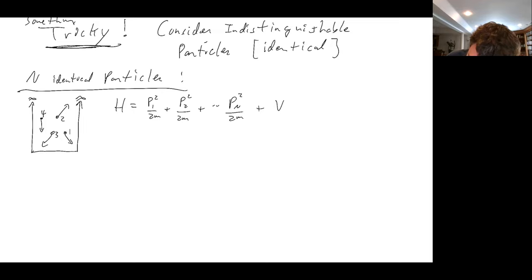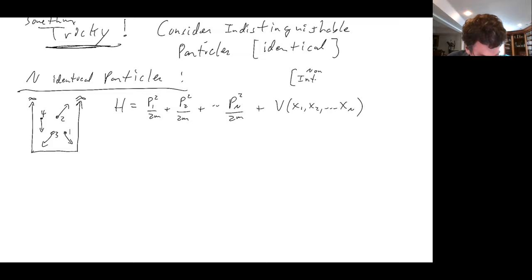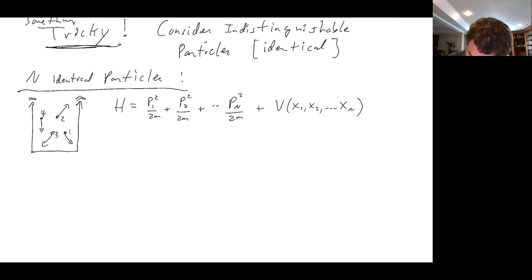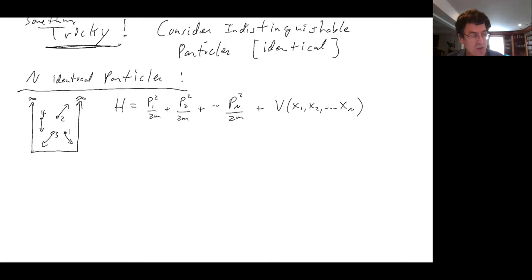The particles are indistinguishable identical particles, but mathematically to write down the Hamiltonian, I have to distinguish them. I have to give them a stamp — each particle gets a number so I can write down an equation for it. So the particles are stamped with little numbers, like tattoos: particle one, two, three, and four.